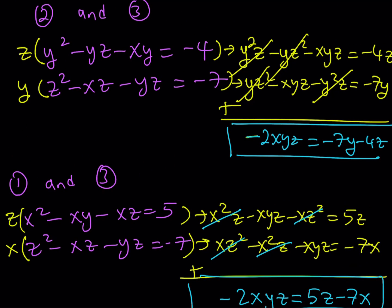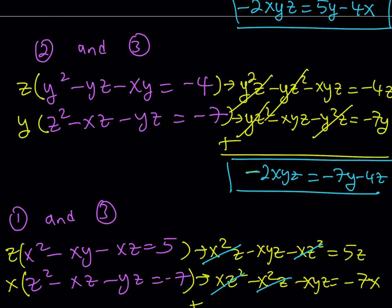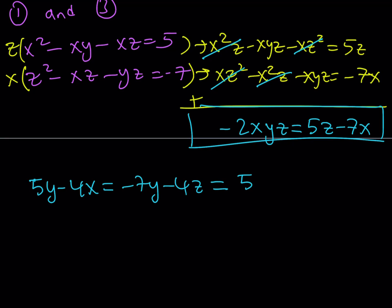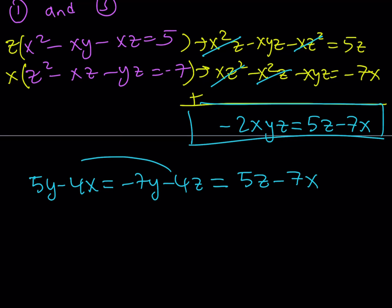Since all three expressions equal negative 2xyz, they equal each other: 5y minus 4x equals negative 7y minus 4z, which equals 5z minus 7x. This lets us express one variable in terms of the others. I'll isolate z. From the first pair, adding 4z and 4x to both sides and subtracting 5y gives 4z equals 4x minus 12y, so dividing by 4: z equals x minus 3y.